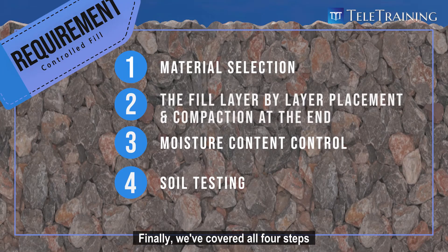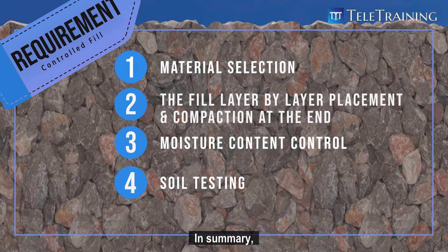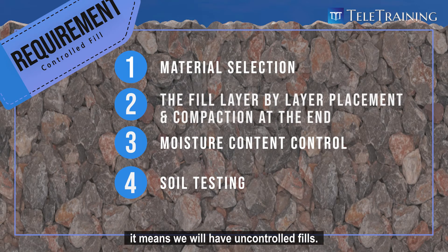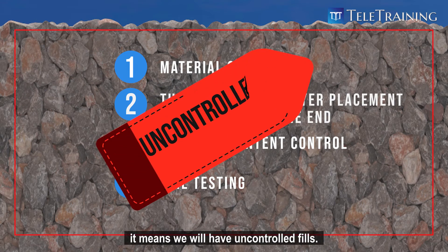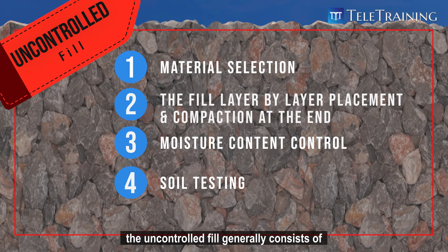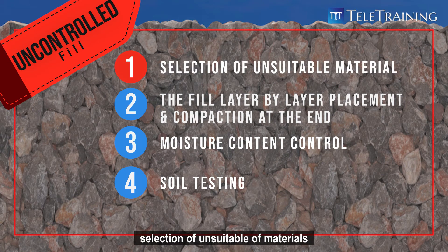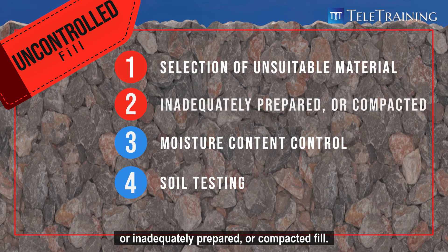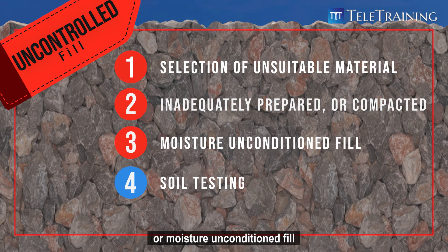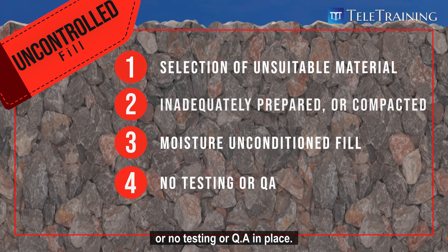We've now covered all four steps to prepare engineered or controlled fills. In summary, if any of these steps are not done correctly, the result is uncontrolled fill. Uncontrolled fill generally consists of selection of unsuitable materials like organic soils, or inadequately prepared or compacted fill, or moisture-unconditioned fill, or no testing or QA in place.